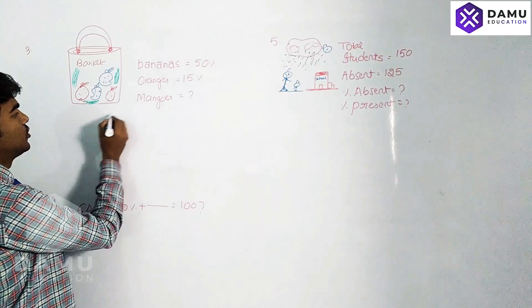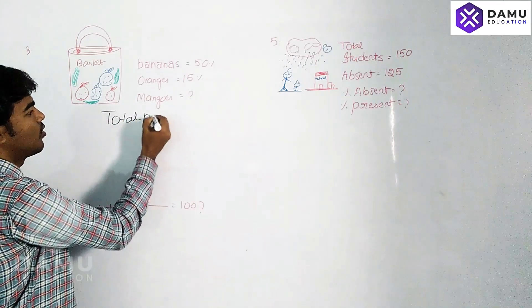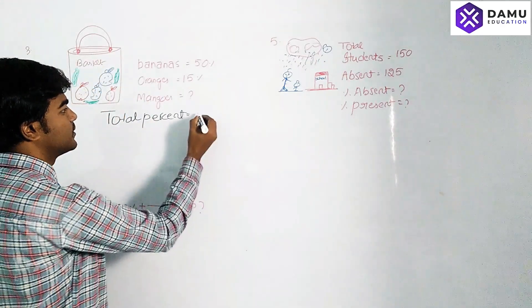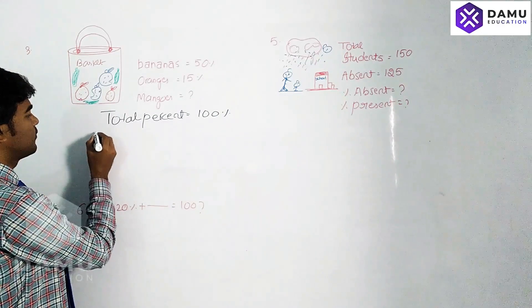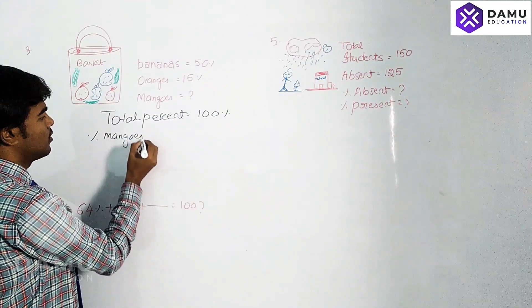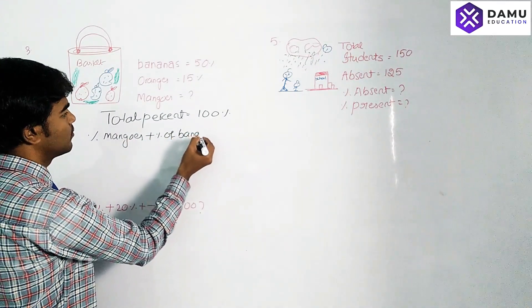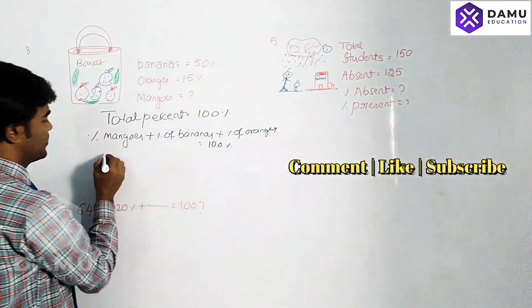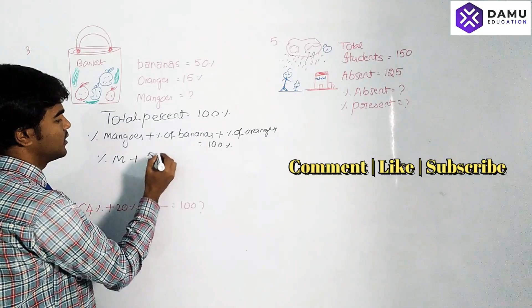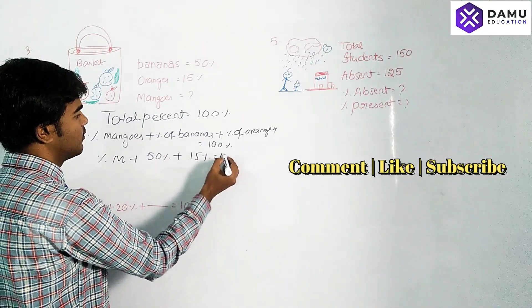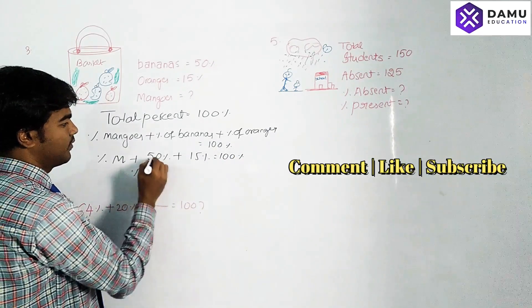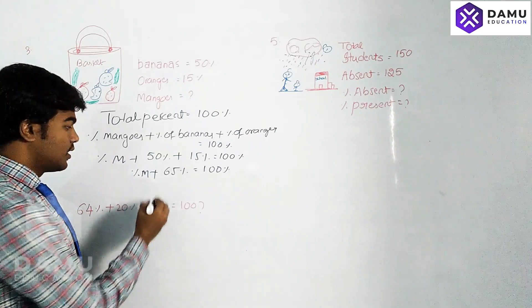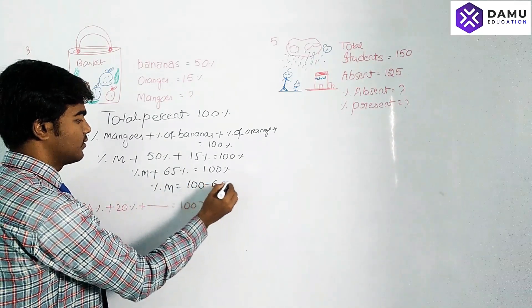Total percentage always equals 100%. So percentage of mangoes plus percentage of bananas plus percentage of oranges equals 100%. Percentage of mangoes (M) plus 50% plus 15% equals 100%. So M plus 65 equals 100.